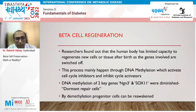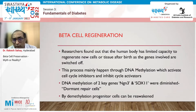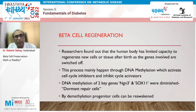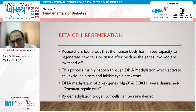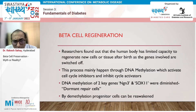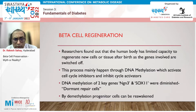Looking at beta cell degeneration and regeneration, the human body has limited capacity to regenerate new cells or tissues after birth, as genes involved are switched off. This happens because of DNA methylation, which activates cell cycle inhibitors. The major genes that get methylated include NGN3 and SOX11, which are dominant repair-related genes.